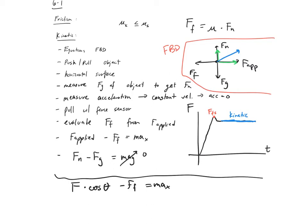How about the Y direction? It'd be F sine theta plus F_N minus F_G equals MA_Y. Remember, if I pull at an angle, unless I'm literally pulling up enough to counter the weight of the object, the normal force is still acting on it. So F_N plus F sine theta support the weight. F_N is still there — the desk is still supporting it — and MA_Y equals zero because we know the object stays on the surface.